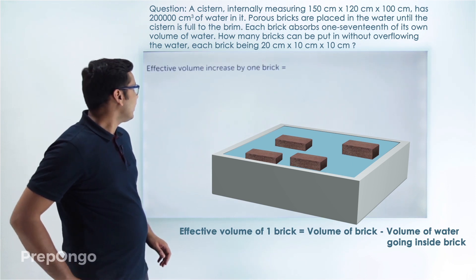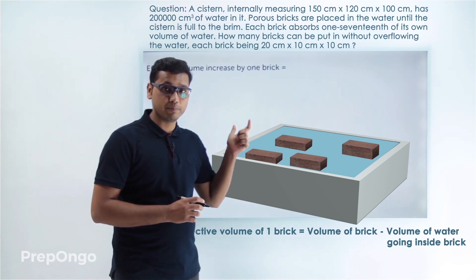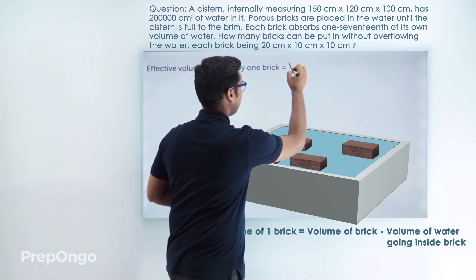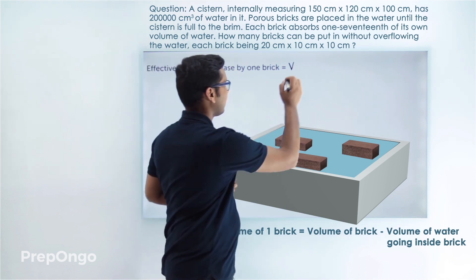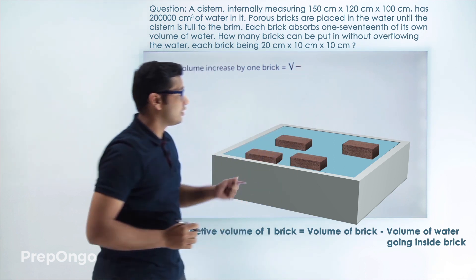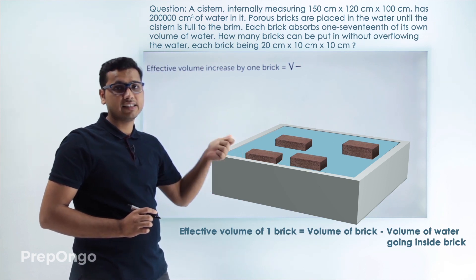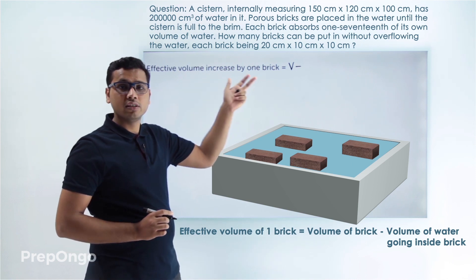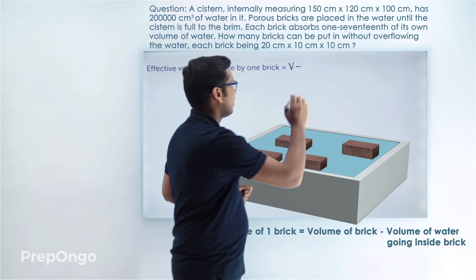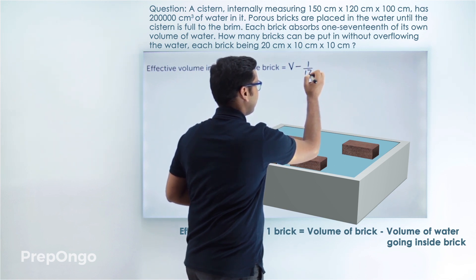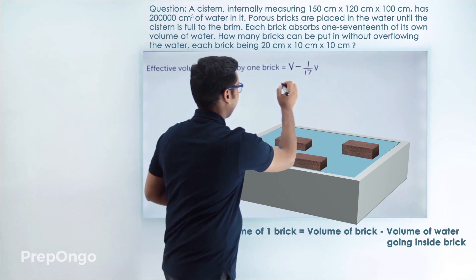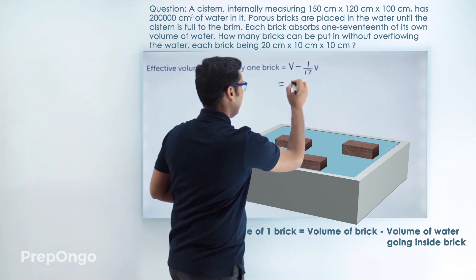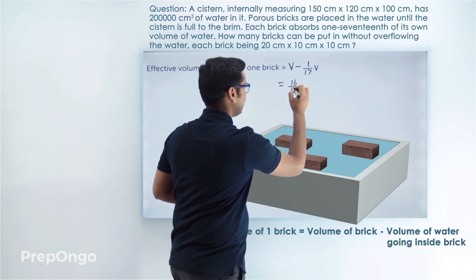So the effective volume of the brick — let's say volume of brick is V — will be the volume of brick minus the amount of water going inside this brick, which is given to be 1/17 of this volume. So this will be V minus 1/17 of V. Taking the LCM and solving, the effective volume comes out to be 16/17 V.